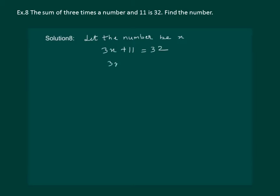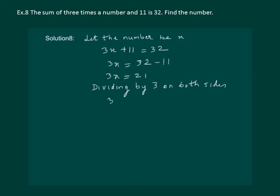We get 3x equal to 32 minus 11, so 3x equal to 21. Now, dividing by 3 on both sides, we get 3x by 3 equal to 21 by 3. On solving, we get x equal to 7. So x equal to 7 is the required number.